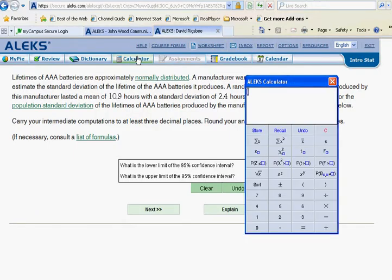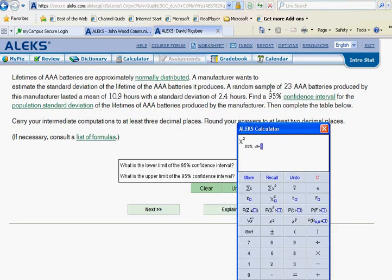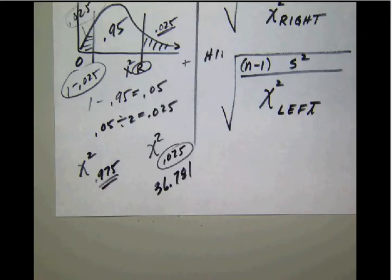Notice here that we're going to be working with the chi-square button. Chi-square likes the area to the right, so we have 0.025. Chi-square is a degree of freedom function with sample size minus 1, so we'll have a degree of freedom here of 22. We calculate that value and see that our chi-square right is going to be 36.781.